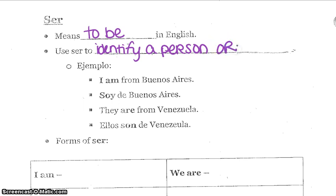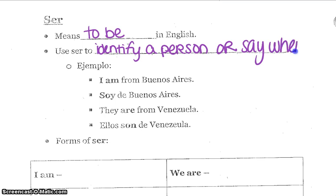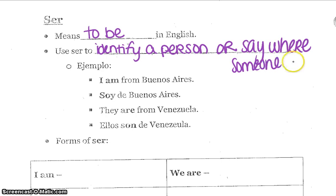To say where someone is from, you can say 'I am from Buenos Aires.' In Spanish, you would say 'soy de Buenos Aires.' You could also say 'they are from Venezuela,' or in Spanish, 'ellos son de Venezuela.'